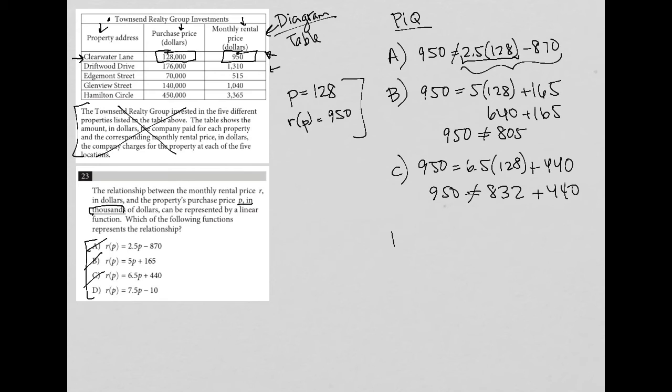So D better be correct, at least if I'm doing it the right way. So I'm not going to just assume D is right and move on. I'm going to try it because if it's wrong, then it shows me that maybe there's something wrong with how I decided to approach this question. So choice D would be nine fifty. So I'm replacing R of P with nine fifty is equal to seven point five times P, which for us is one hundred and twenty eight and then minus ten.